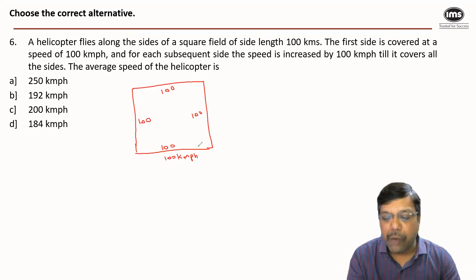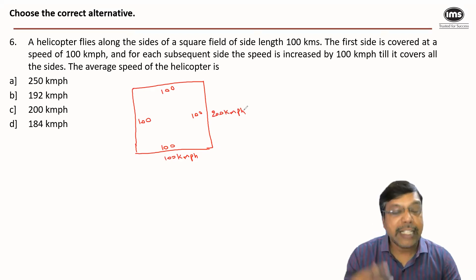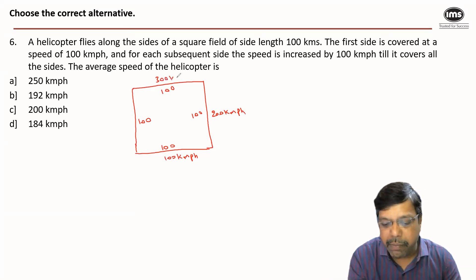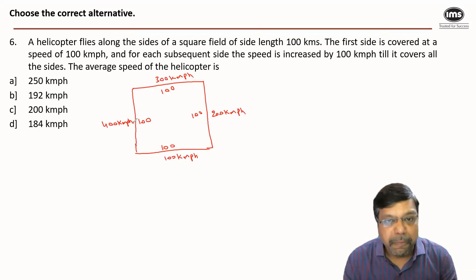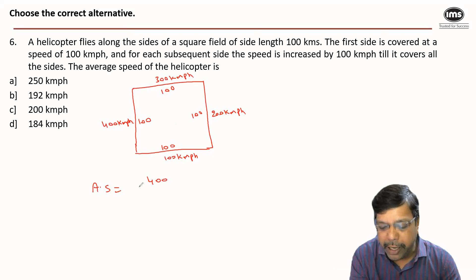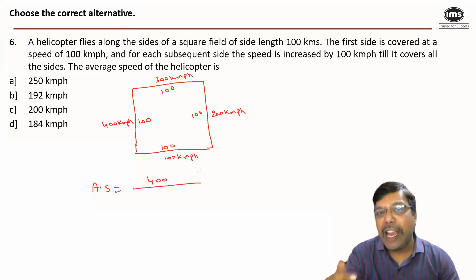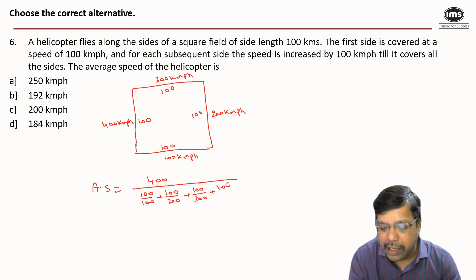Average speed by definition is total distance divided by total time taken. Total distance is 4 sides of the square, so 400 km. Time is distance divided by speed, so the time for each side is: first side 100/100, second side 100/200, third side 100/300, and fourth side 100/400.